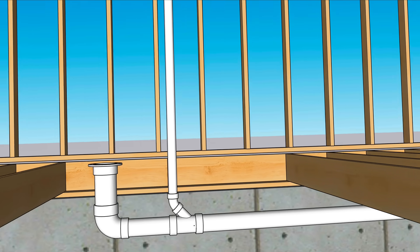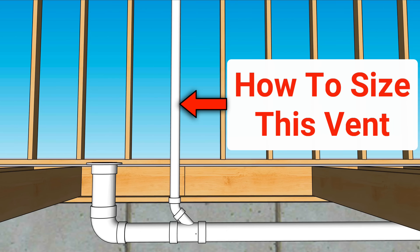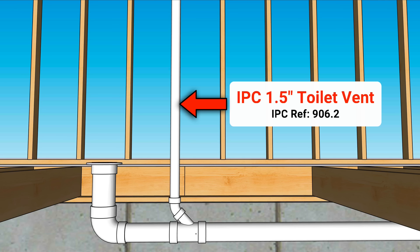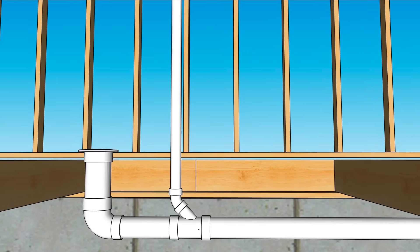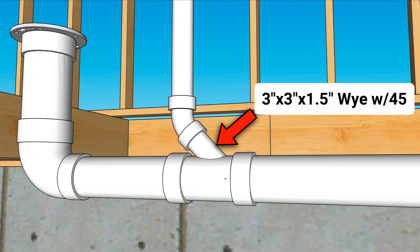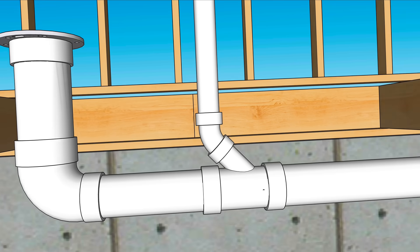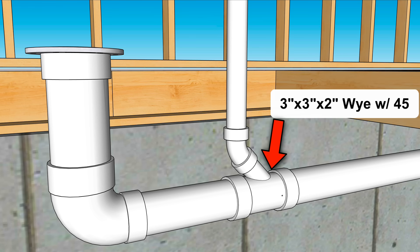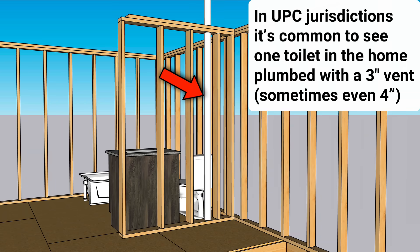Let's talk about how to size a toilet's vent. The size depends on your local plumbing code. The two main codes in the U.S. are the IPC and the UPC. In the IPC, a toilet's individual vent is sized at an inch and a half, based on section 906.2 — so you can install a three by three by inch-and-a-half Y with an inch-and-a-half street 45 to vent the toilet. In the UPC, toilet vents are sized at a two inch minimum, so you'd go with a three by three by two Y with a two inch street 45.